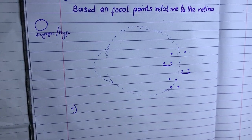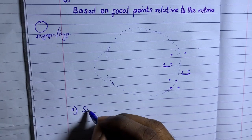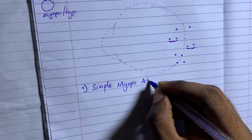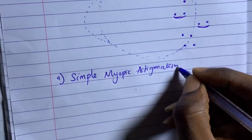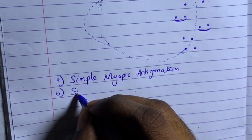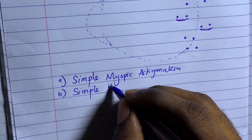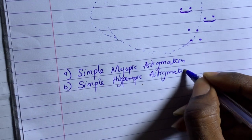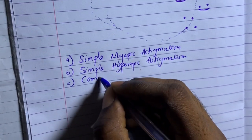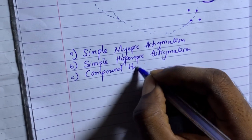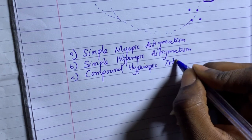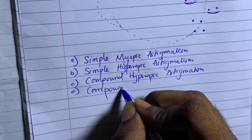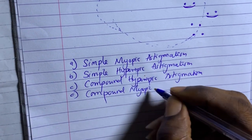For the classifications based on focal point relative to the retina, there are five in all: simple myopic astigmatism, simple hyperopic astigmatism, compound hyperopic astigmatism, compound myopic astigmatism, and mixed astigmatism.